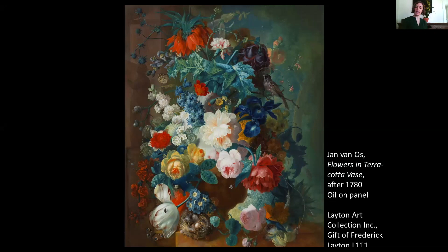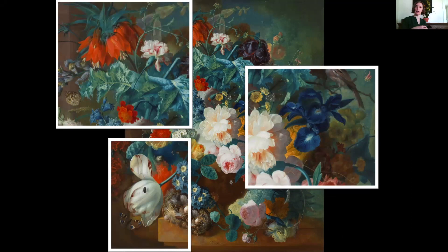One of the first things you start to understand about this painting is that what Van Oss has created for us is in fact an impossible bouquet — a bouquet that never could have existed in nature. We know this when we start to look at the flowers he's chosen to depict. In the upper left-hand corner you see the beautiful scarlet orange fritillaria with its downward hanging bell-like flowers. On the right-hand side of the composition at the center is the familiar purplish blue iris. And at the bottom left is the classic white tulip with red flamed edges that we think of as such a national symbol for the Netherlands. All of these flowers are springtime flowers, associated with this time of new life and rebirth and emerging from a cold forbidding winter.